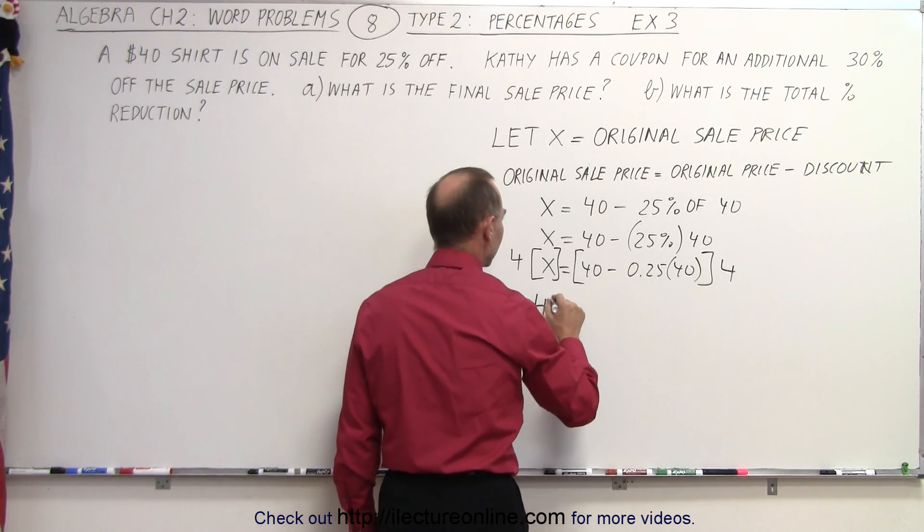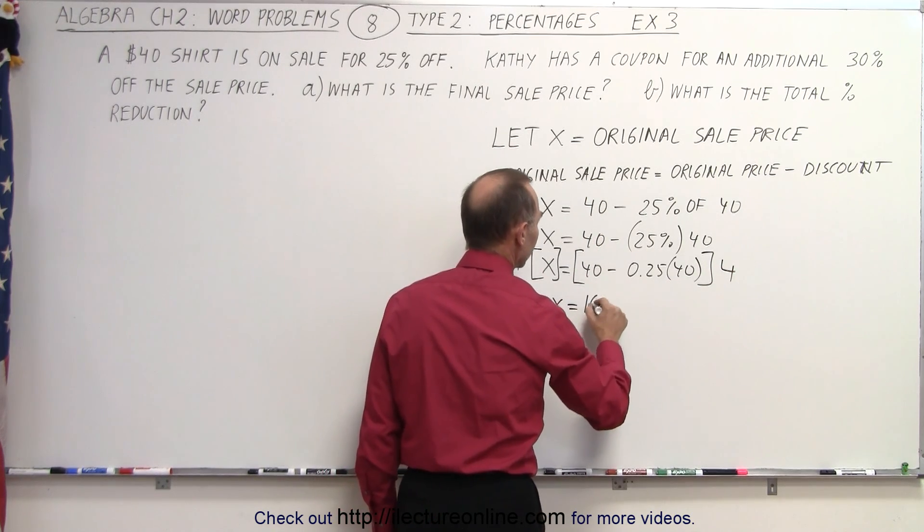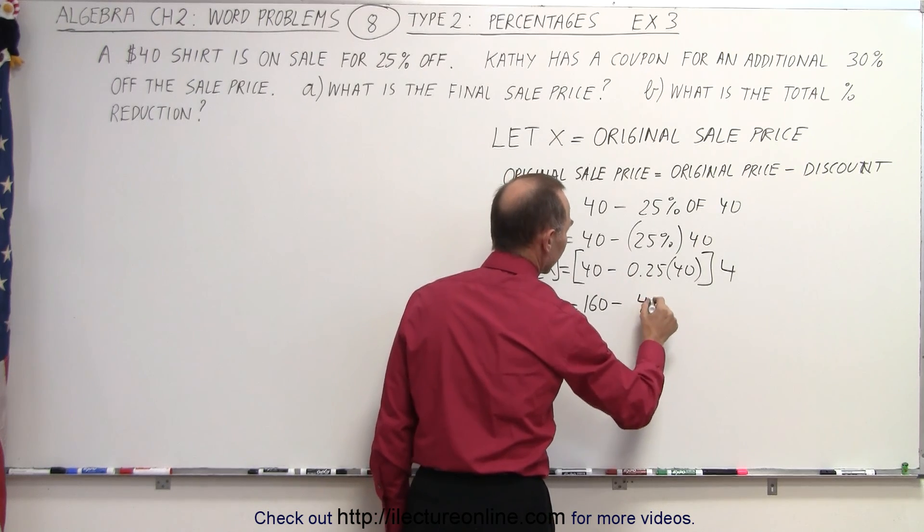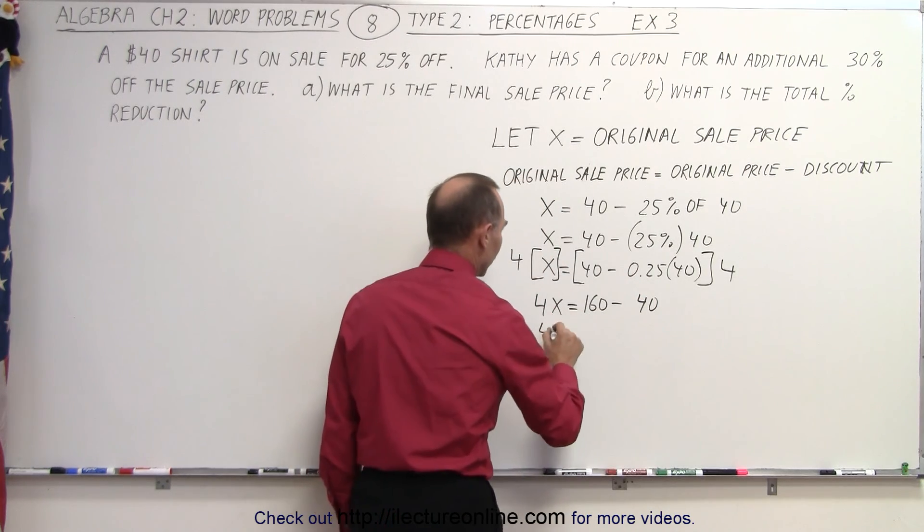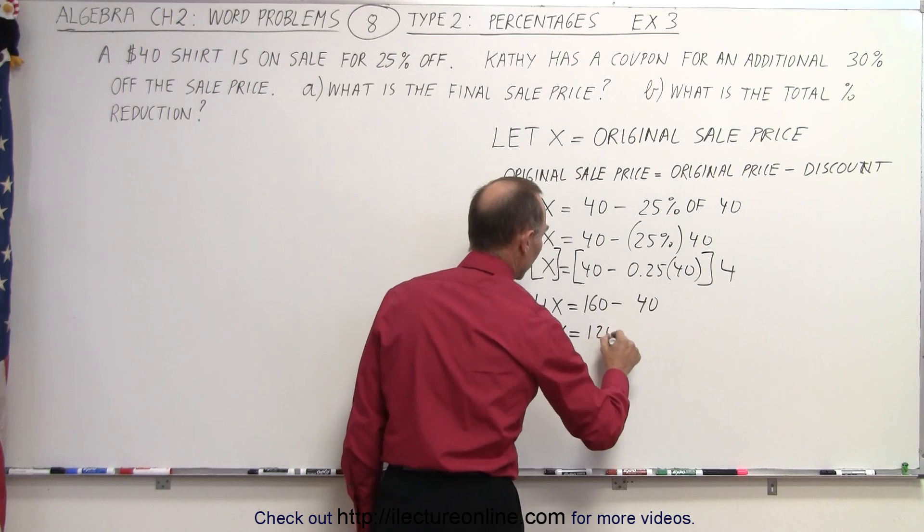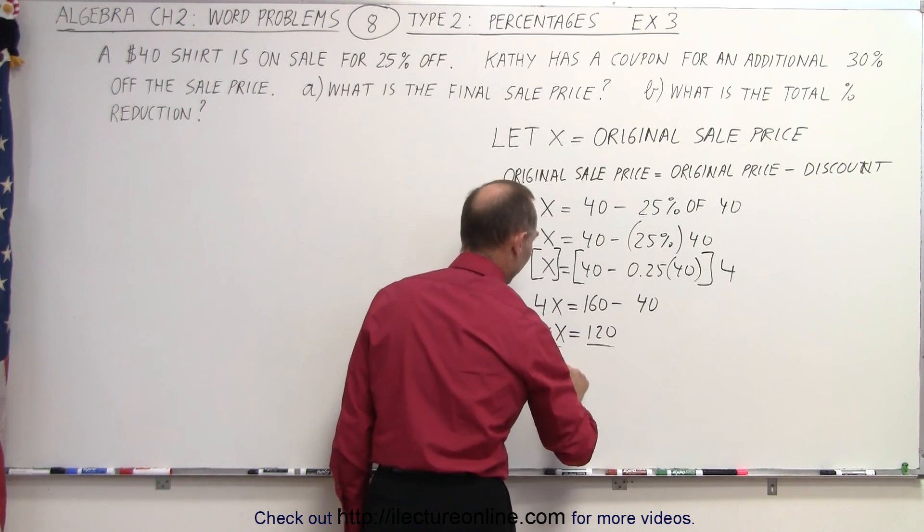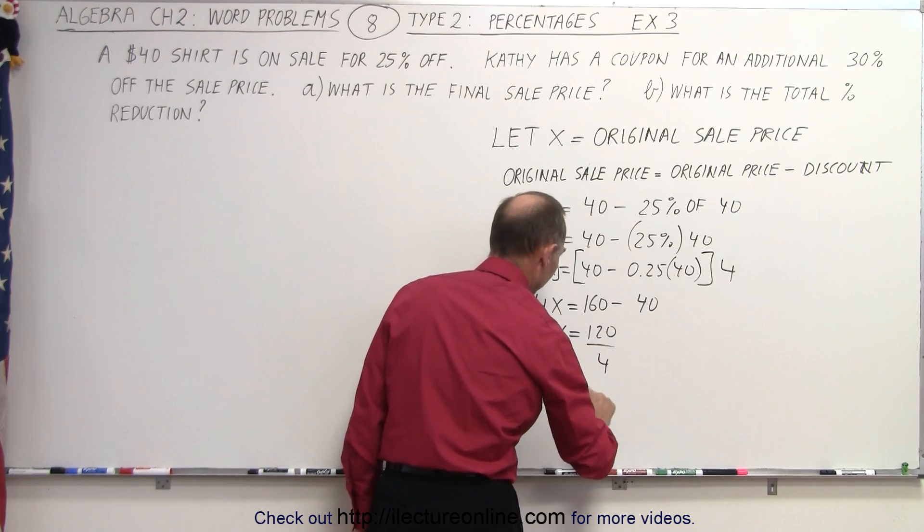We get 4x is equal to 160 minus 1 times 40. And that means 4x is equal to 120, divide both sides by 4, and we get x is equal to 30.